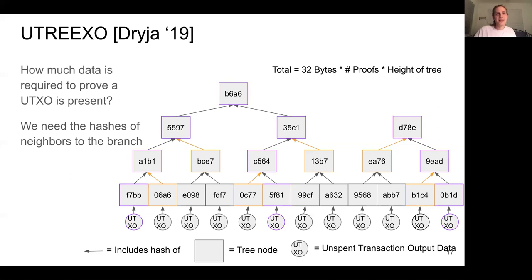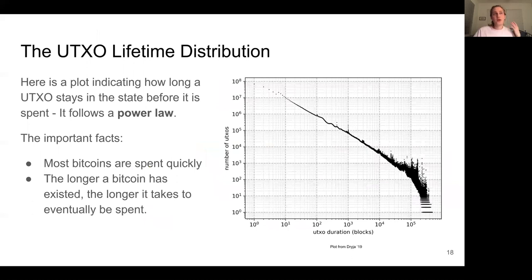So ultimately, the proof size in utreexo is at most the hash size times the number of leaves for which we need a proof times the height of the tallest tree. So how can we improve on the utreexo scheme? What can be done to make the proof sizes shorter?